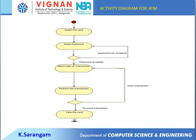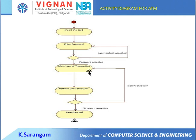The activity diagram for an ATM starts with inserting a card and entering a password. The server verifies the password; if valid, it continues to the transaction. The type of transaction is selected and performed. An invalid transaction returns to the selection step. If the transaction is valid and successful, the customer takes the card and the process stops.